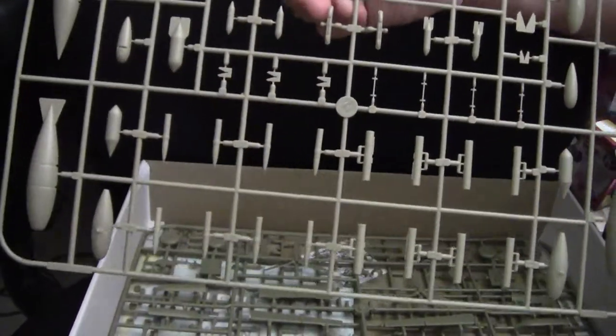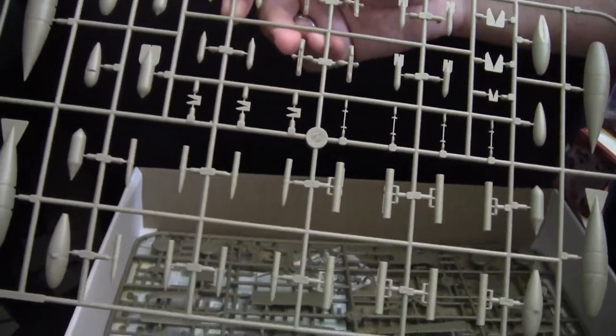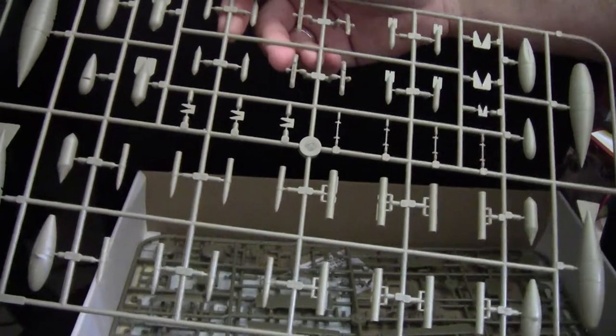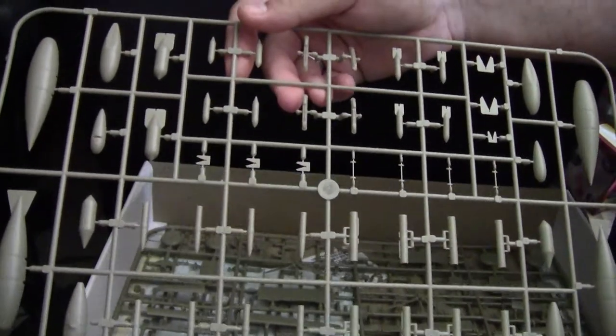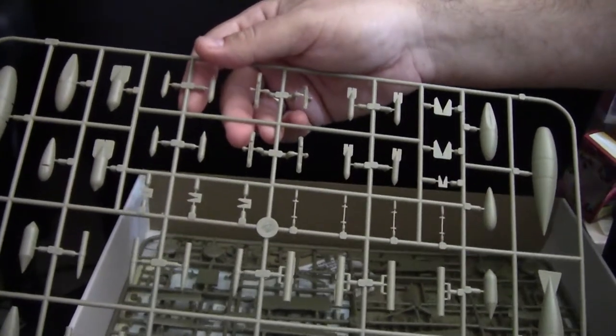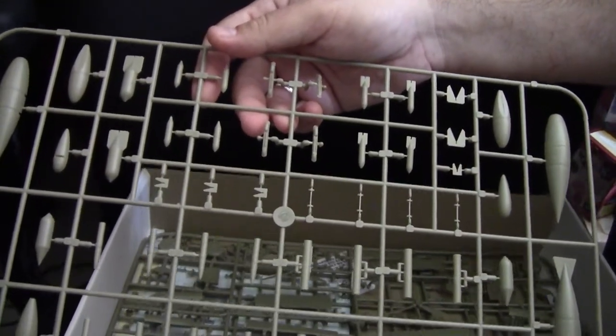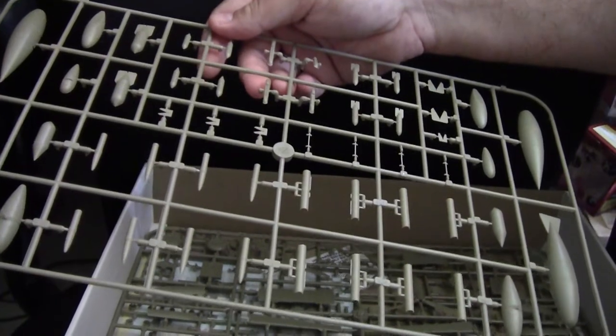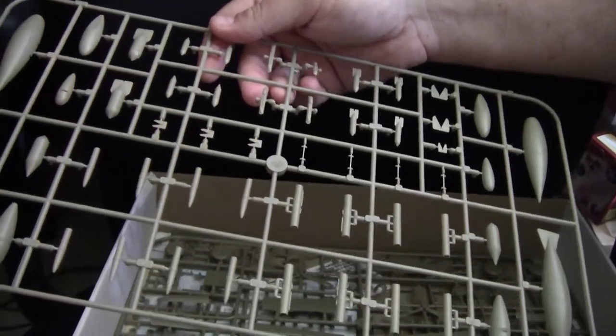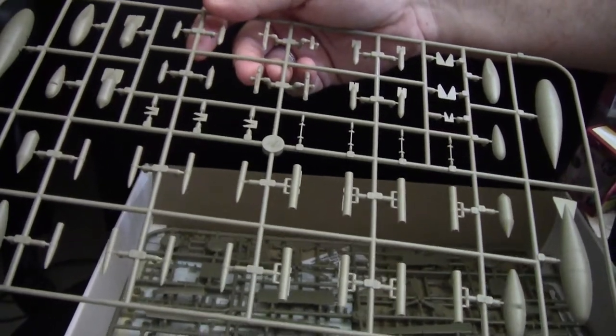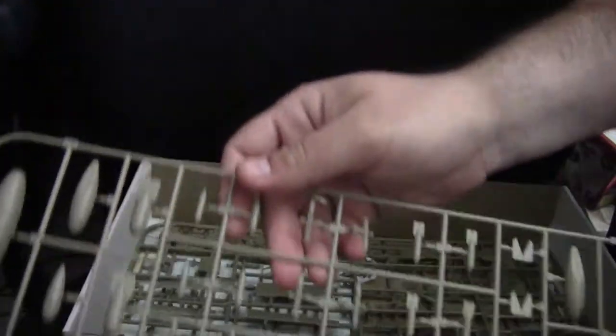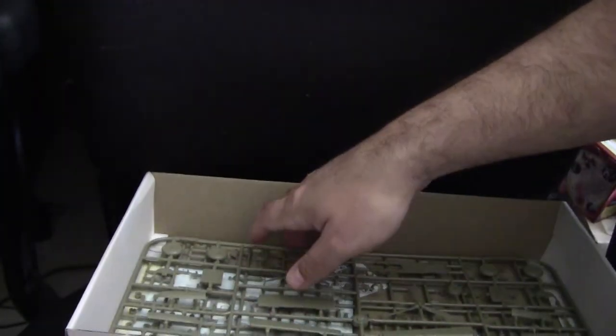Now, the next sprue comprises basically all of our armament options. As well as our external fuel tanks. Our rockets, bombs, and a couple other odd and end parts. As well as mounting brackets for all of them. Overall, not a whole lot to say here. Eduard has done a very nice job giving you a large diversity of armament options.